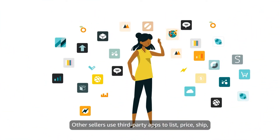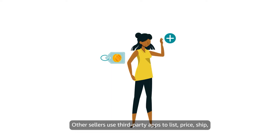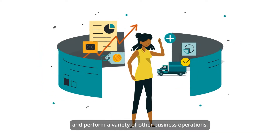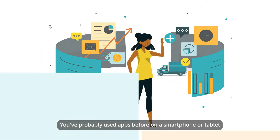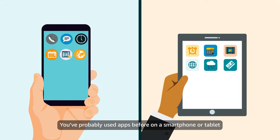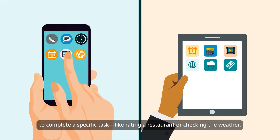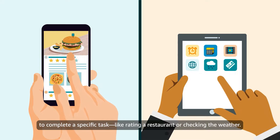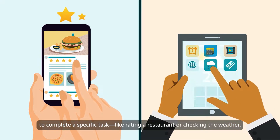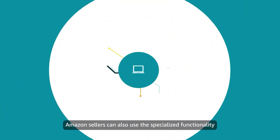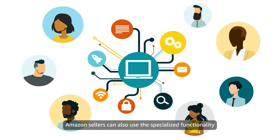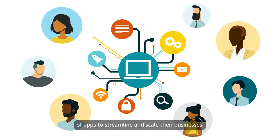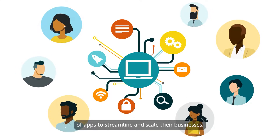Other sellers use third-party apps to list, price, ship, and perform a variety of other business operations. You've probably used apps before on a smartphone or tablet to complete a specific task, like rating a restaurant or checking the weather. Amazon sellers can also use the specialized functionality of apps to streamline and scale their businesses.